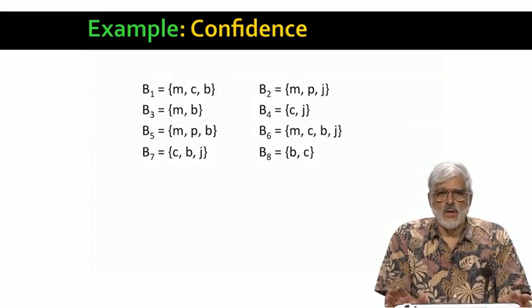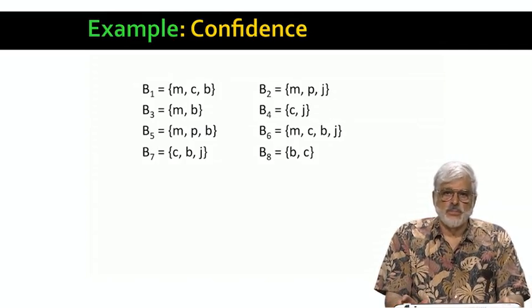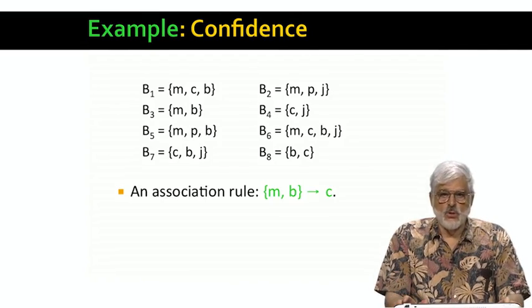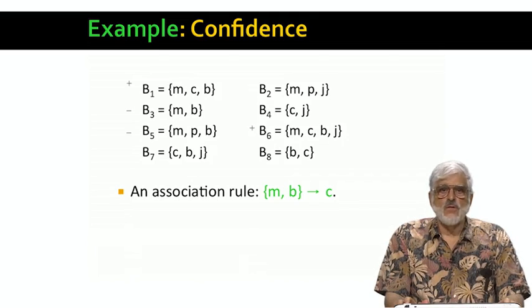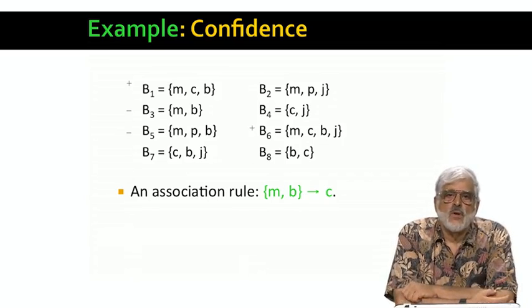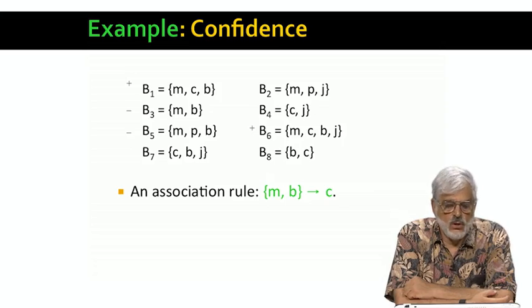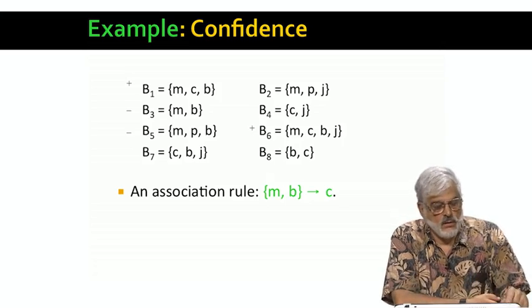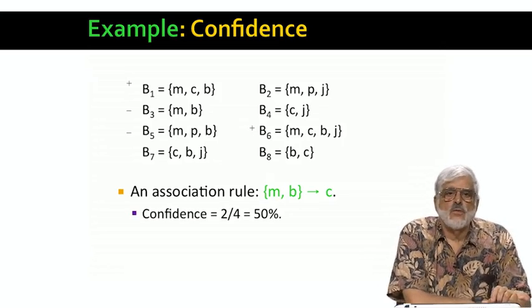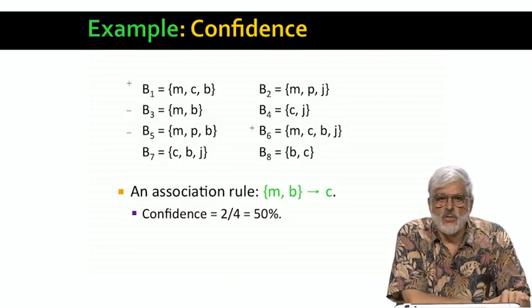For example, here are the eight baskets we saw earlier. A possible association rule is this: milk and beer imply Coke. Let's focus on the four baskets that have both milk and beer. We see that B1 and B6 do have Coke, while B3 and B5 do not. Thus, two out of the four baskets with milk and beer do have Coke, and the confidence of this rule is 50%.